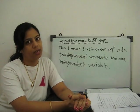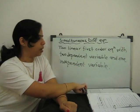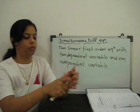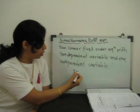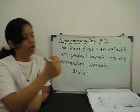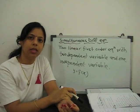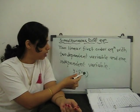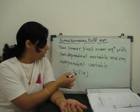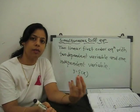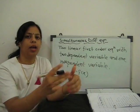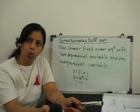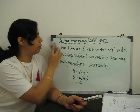Two linear first order equations with two dependent variables and one independent variable. Dependent variable means the variable which depends on the other variable. For example, if y = f(x), then y is dependent and x is independent, because y is a function of x — if we change the value of x, y changes accordingly. In our simultaneous equations there are two dependent variables and one independent variable.